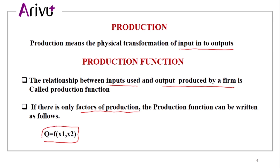Here, q is the output, f means function, and x1 and x2 are the two units of inputs used in production.